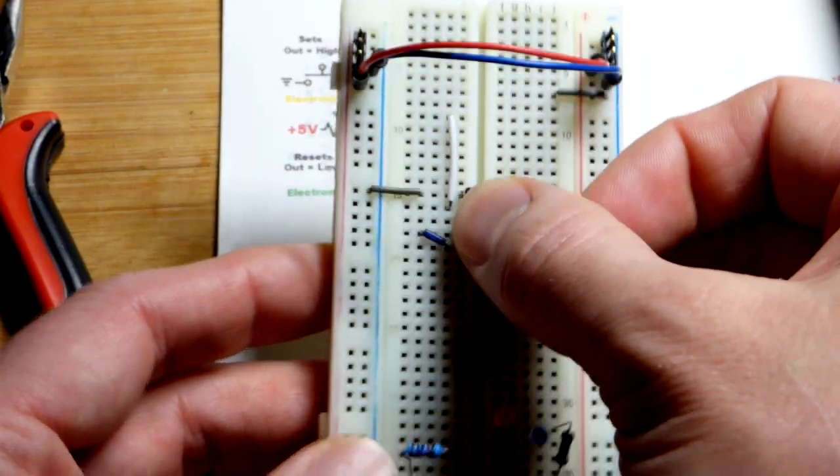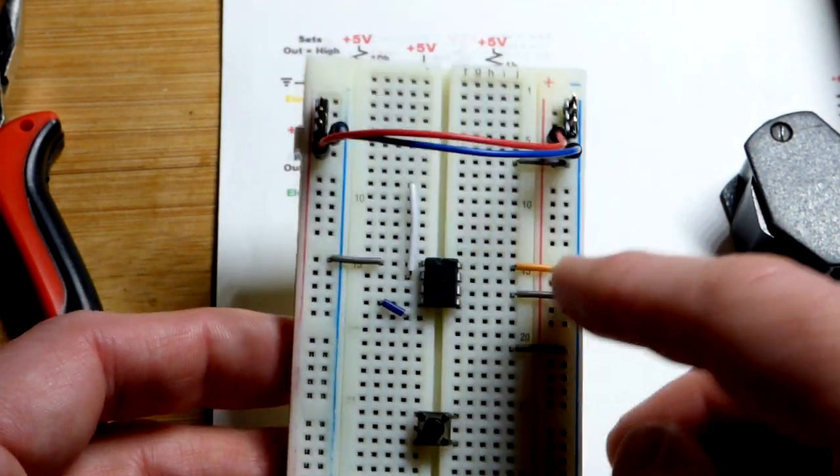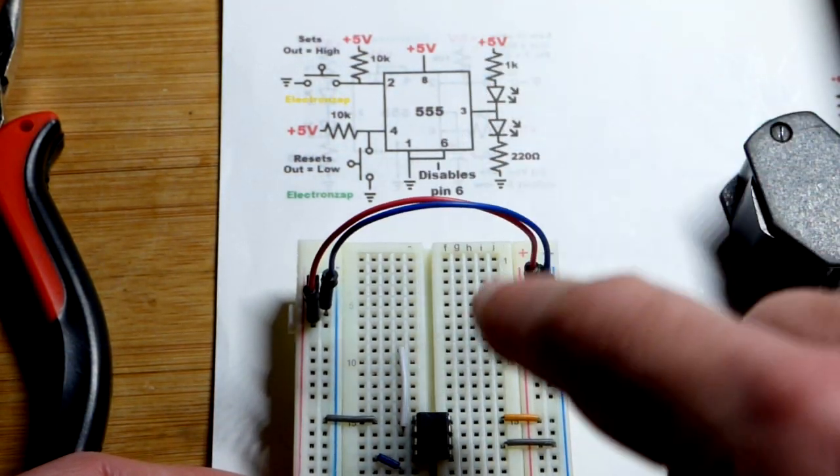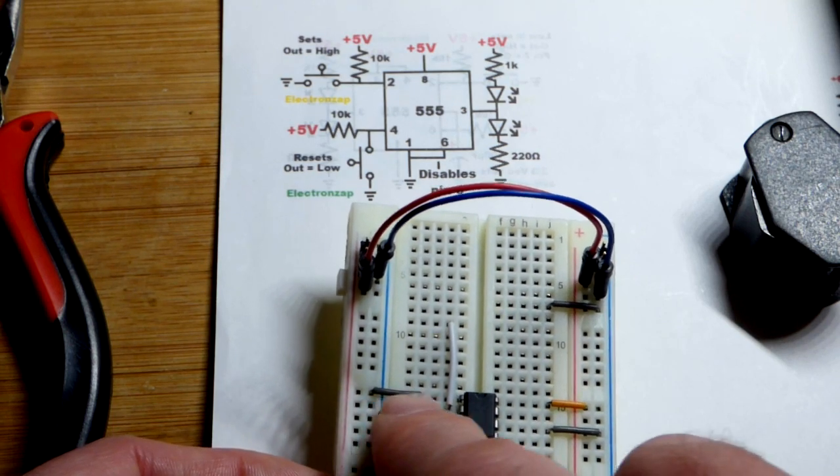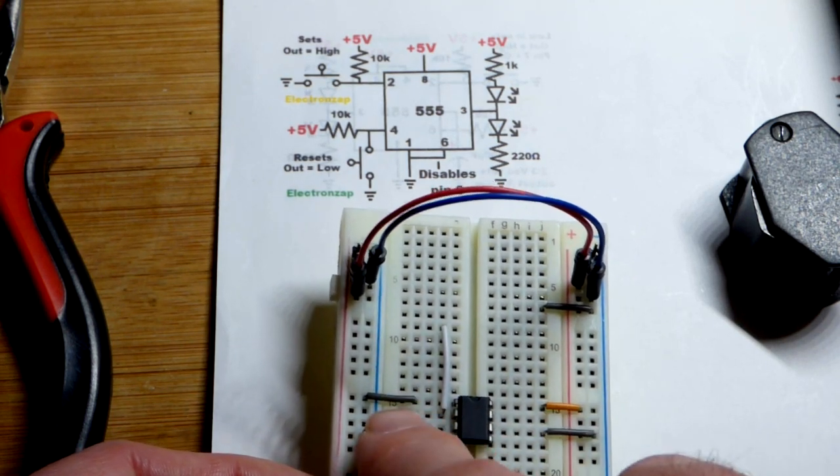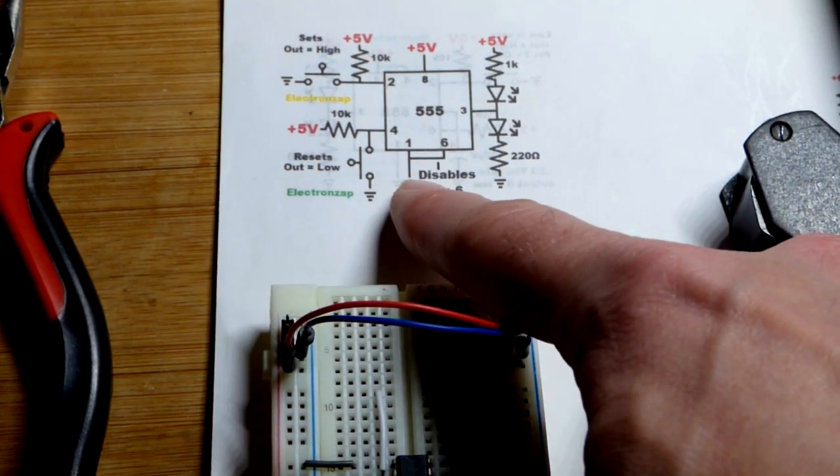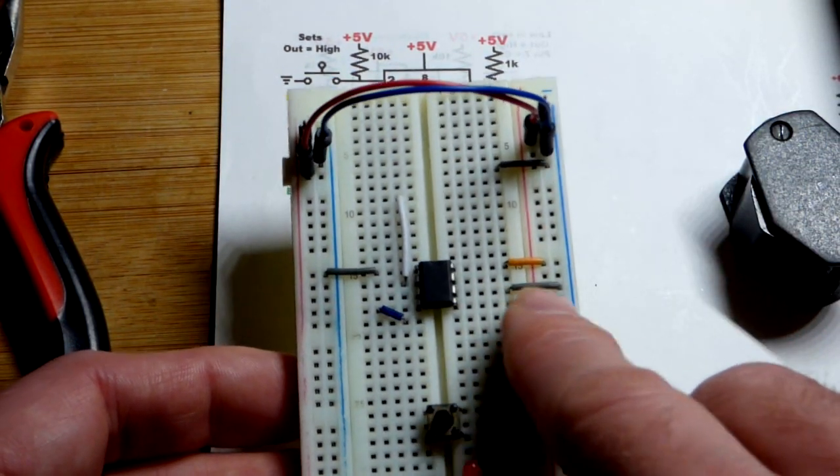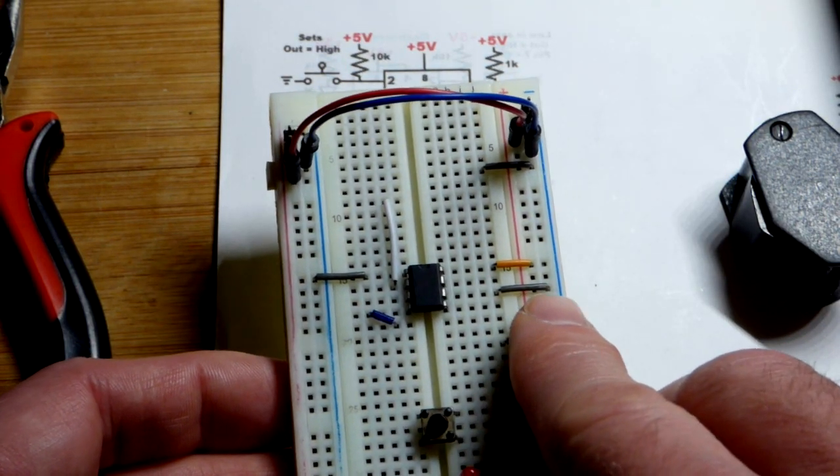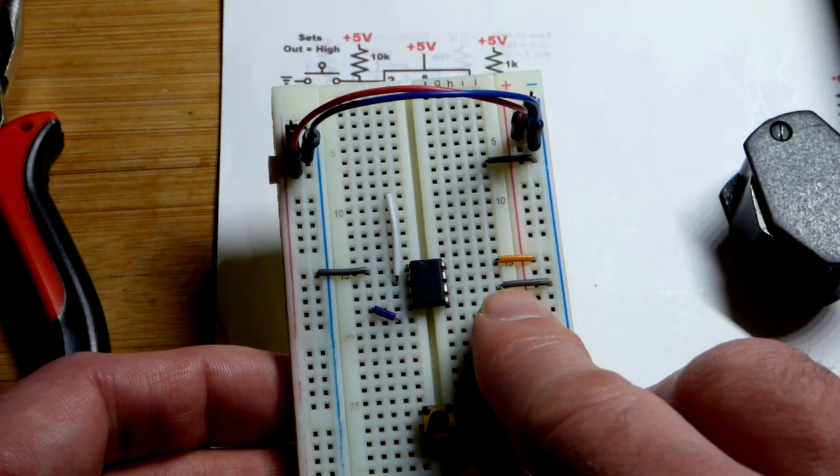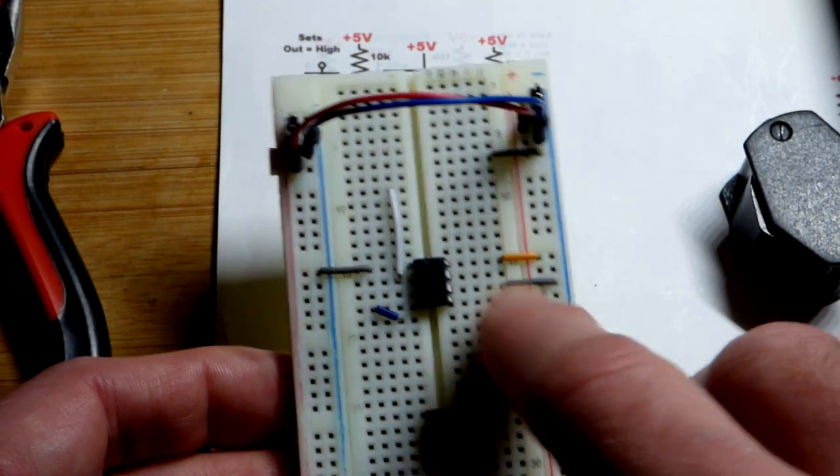We plug it in and power it. Pin 8 is positive supply VCC, plus 5 volts on my diagram. Ground, negative supply, zero volts goes to pin number 1. Pin number 6 is the threshold pin. We use that for looking at a capacitor that's charging - needs two-thirds or more supply voltage before it does something. It's active high, waiting for a high enough voltage, so we put it to ground to disable it.